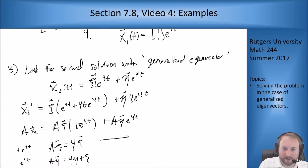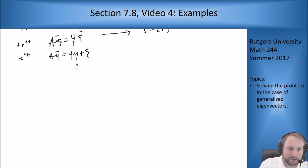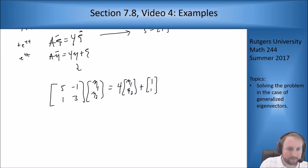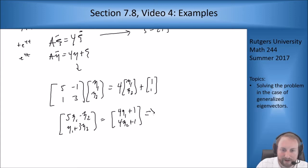This tells me that ξ is my eigenvector from before, and I can plug into this equation to find η. So the equation becomes [5,-1; 1,3][η₁; η₂] = 4[η₁; η₂] + [1; 1]. This gives [5η₁-η₂; η₁+3η₂] = [4η₁+1; 4η₂+1]. Canceling terms, the top equation gives η₁-η₂ = 1, and the bottom also gives η₁-η₂ = 1. These are redundant equations.